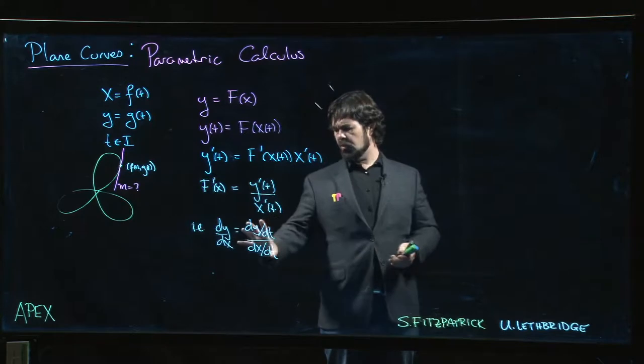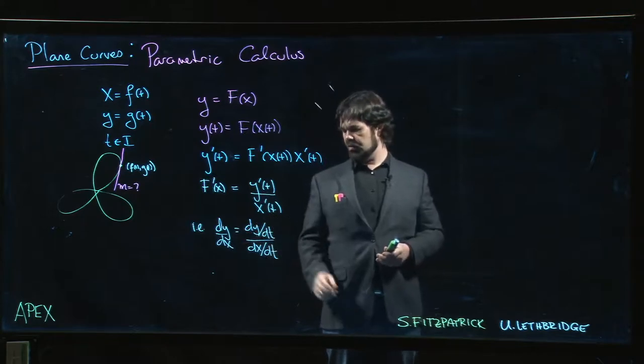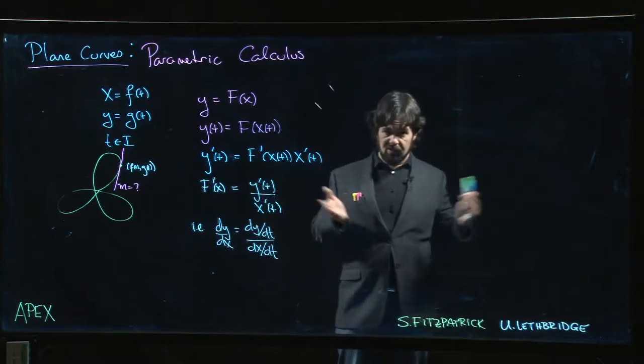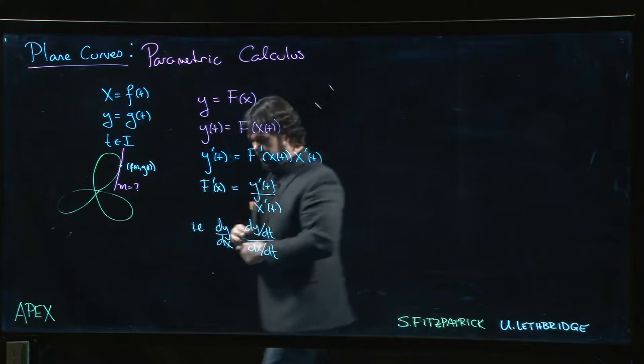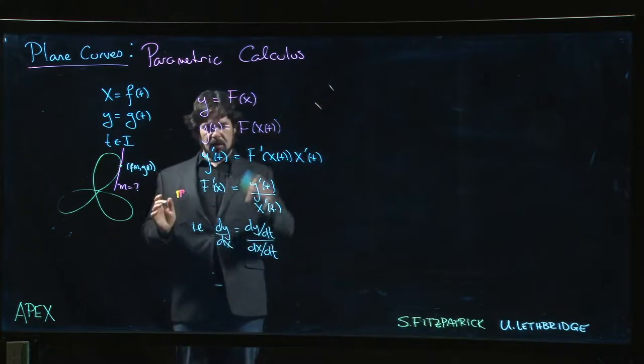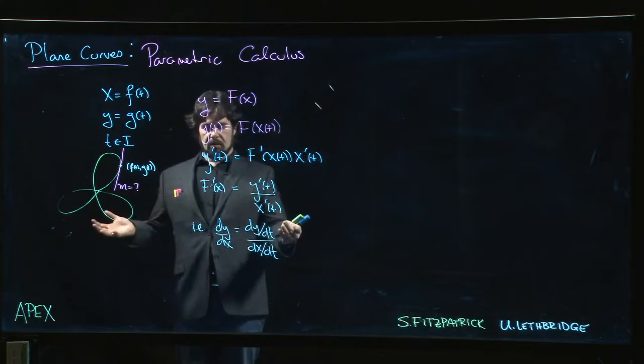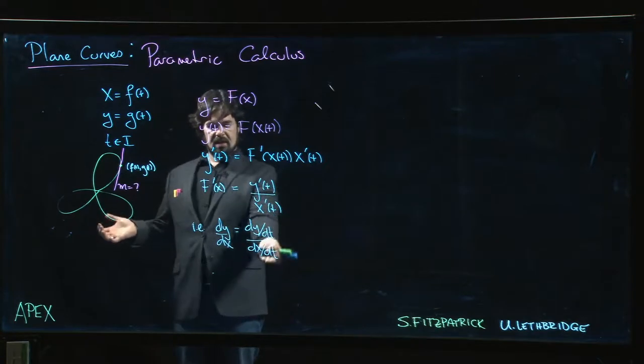And some people like thinking about it this way because, although we shouldn't really think of these as fractions, if you do you can think of the dt's as canceling out and giving you the equality. The point is we have a way of computing dy/dx: dy/dt divided by dx/dt.